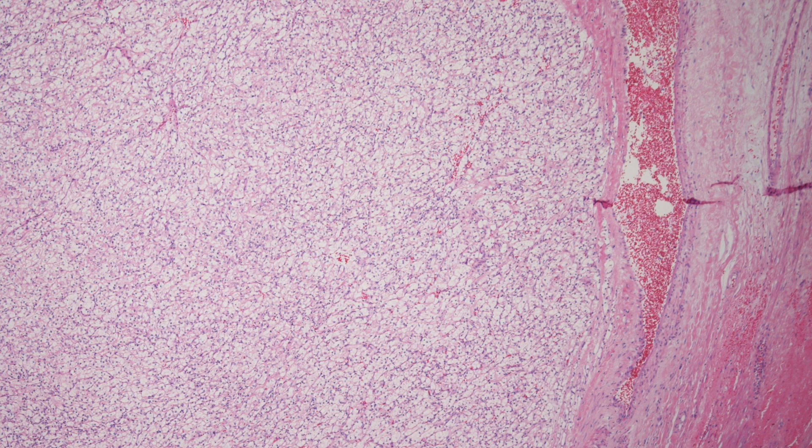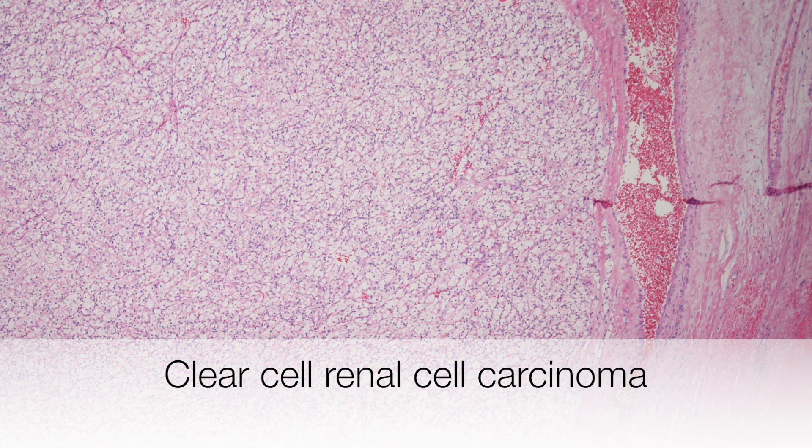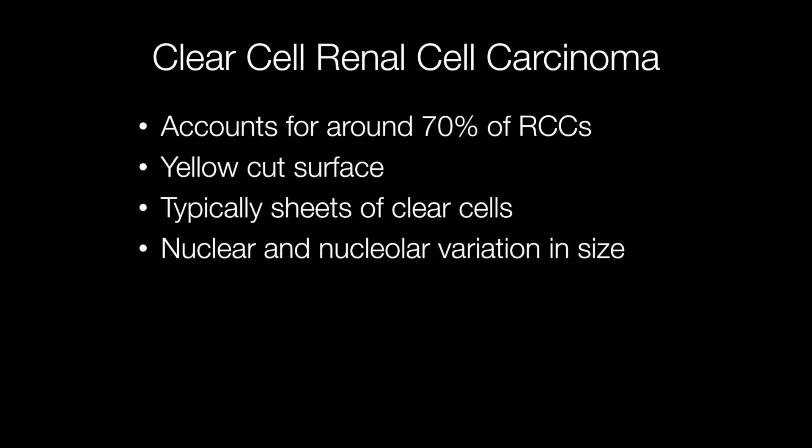The second case was the radical nephrectomy from a 60-year-old female containing a 30mm yellow mass. This is the commonest type of adult parenchymal kidney tumour — conventional clear cell renal cell carcinoma — accounting for around 70% of all renal cell carcinomas.